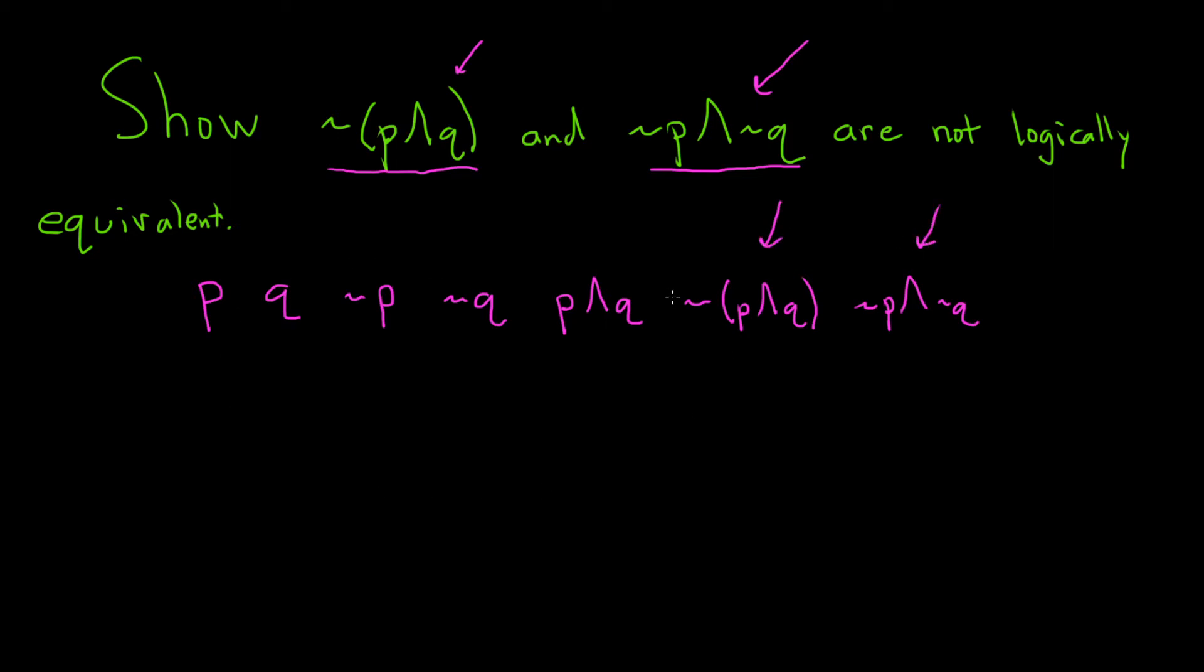So now what we do is we fill in the truth table and we just compare these last two columns here. Those are our statement forms. And these have to be identical row by row. If they are, then they're logically equivalent. But they shouldn't be because we're going to show they're not logically equivalent.